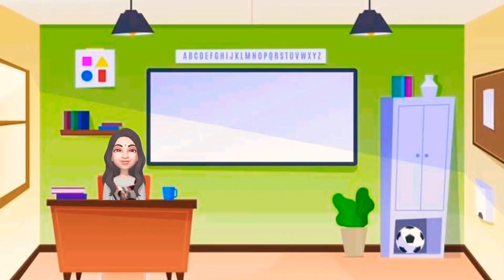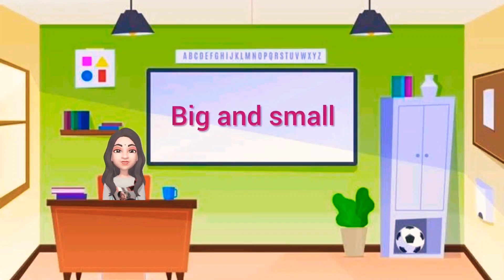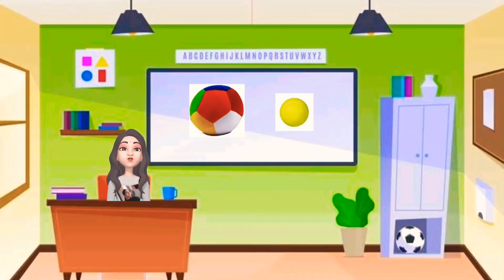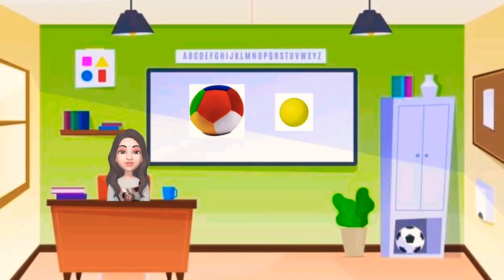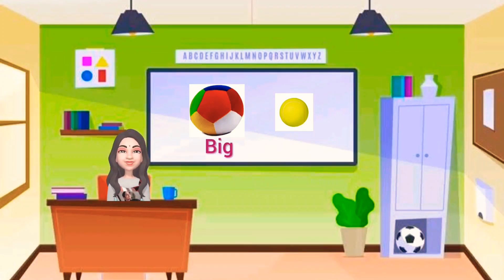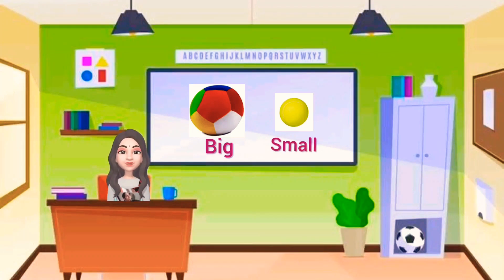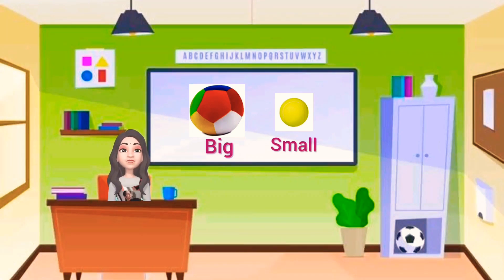Hello children, would you like to know the difference between big and small? So let's begin. Look at these two pictures. There are two balls, but are they of the same sizes? No. One is big and the other one is small. So when we compare objects based on their sizes, we get big and small objects.